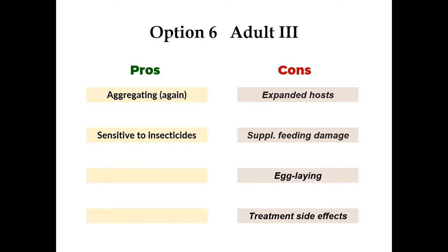For adult stage in October — the good news is they are still aggregating, maybe not only on Ailanthus, but on other trees like maples. They are still sensitive to insecticides. The bad news is you have to consider more hosts, and they are going to create some damage through supplemental feeding. They're going to stay to lay eggs, which will create more generations next year. There are also treatment side effects — for example, when you treat maple trees with insecticides in a maple syrup industry area, that's a problem.